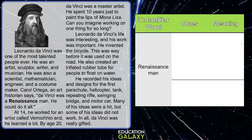Here we have an unfamiliar word: a renaissance man. You know what the word 'man' means, so we have to figure out the meaning of the unfamiliar word 'renaissance.' Let's look at the first clue — it's a sentence clue.